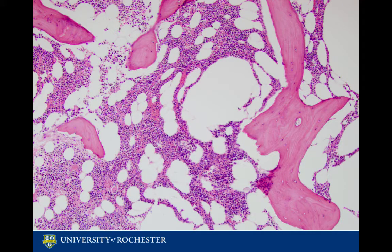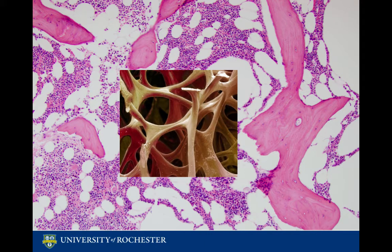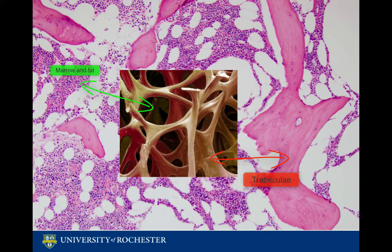The current 10x image shows the normal histology of spongy bone. We can tell this is spongy bone because of the presence of marrow and fat. Another key feature of spongy bone are these solid pink structures called trabeculae. The solid part — the part we would actually consider bone — are the trabeculae, and in between the trabeculae, those little pores are where bone marrow and fat cells are located.